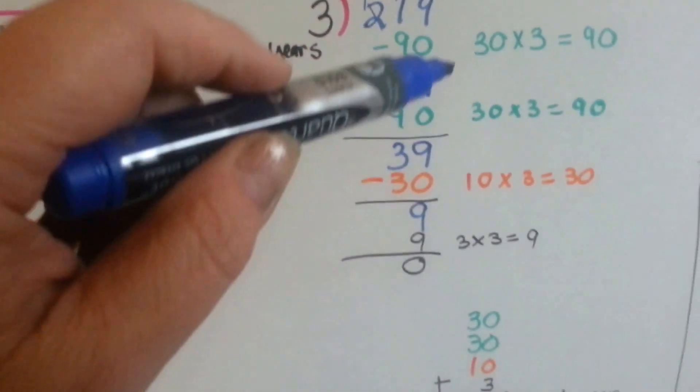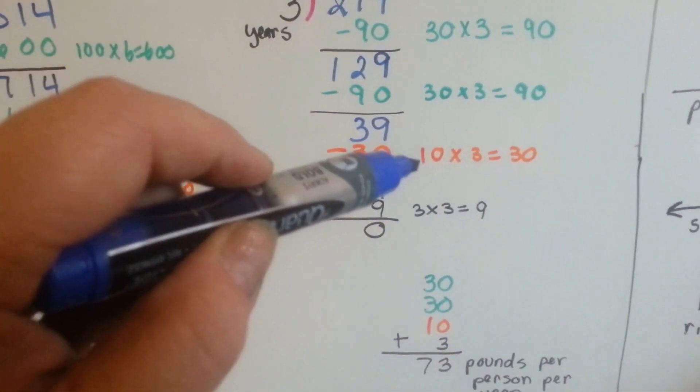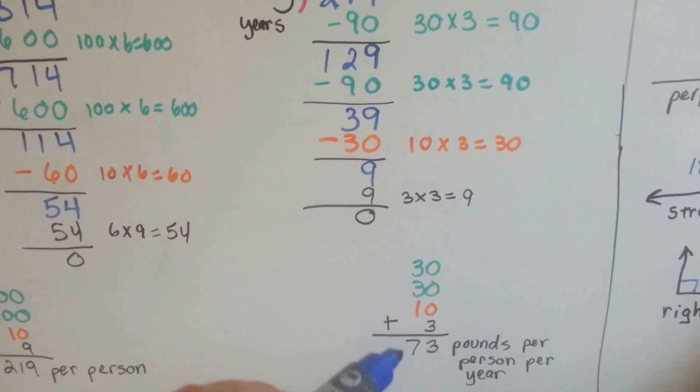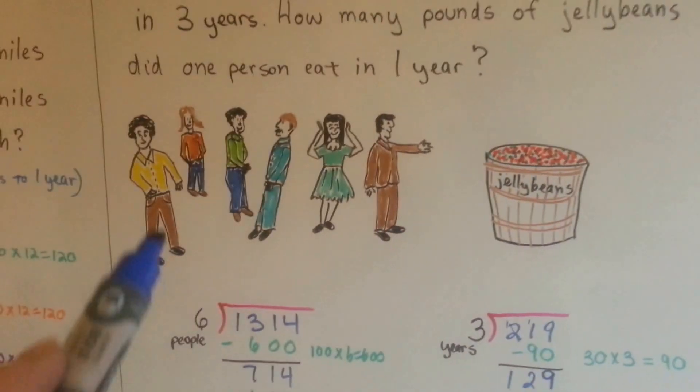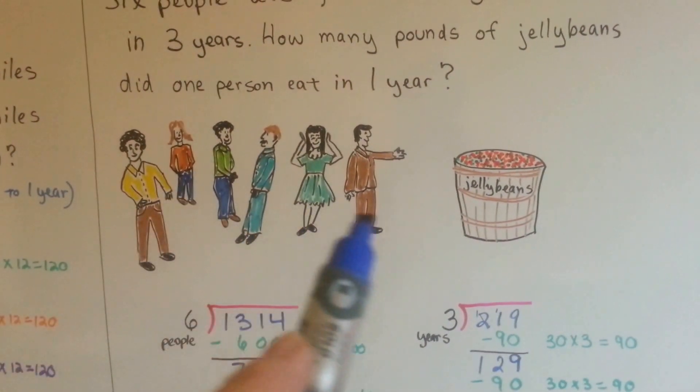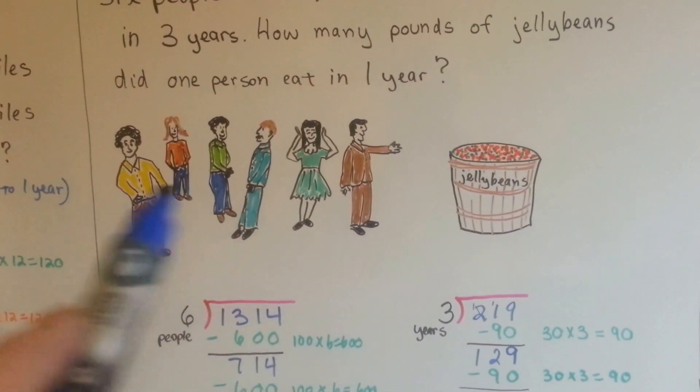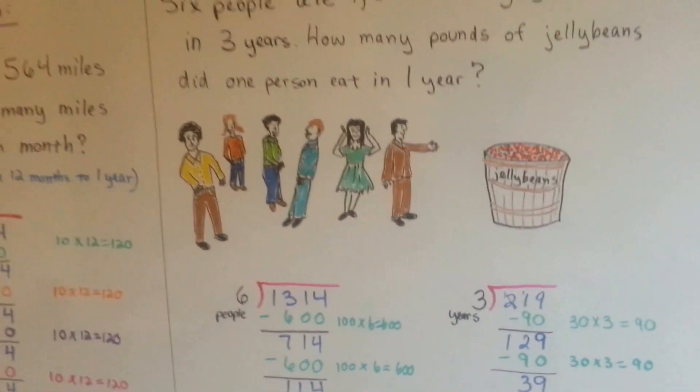So now we can add the 30, the 30, the 10, and the 3, and we get 73 pounds per person per year. My goodness, each one of these people ate 73 pounds of jelly beans per person per year. That's a lot of sugar.